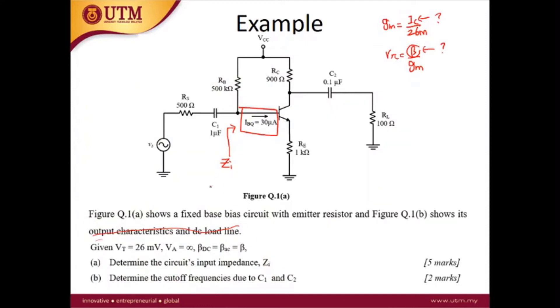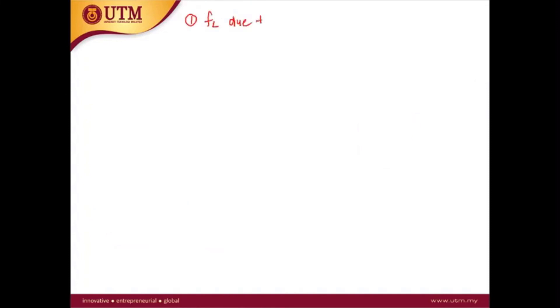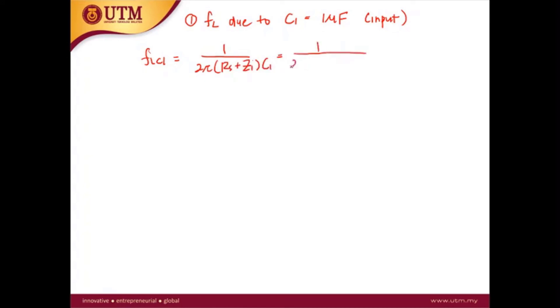The next question is to determine the cutoff frequency due to C1 and C2. For C1 = 1 µF, which is at the input, the lower cutoff frequency FL due to C1 is equal to 1 over 2π times the resistance seen by C1 times C1.